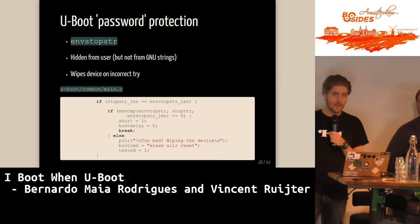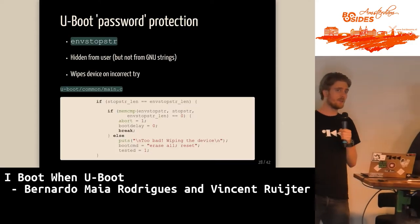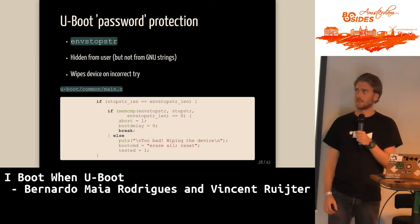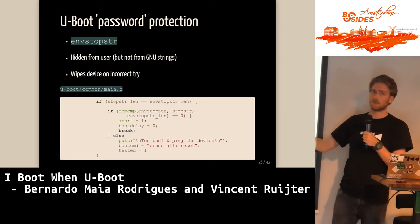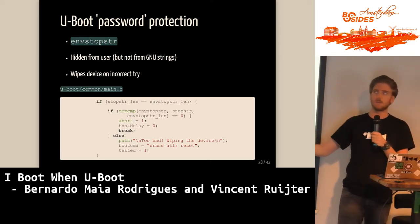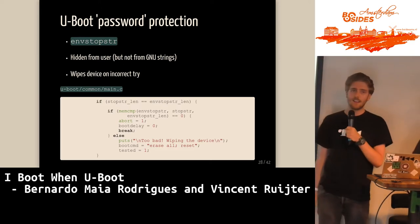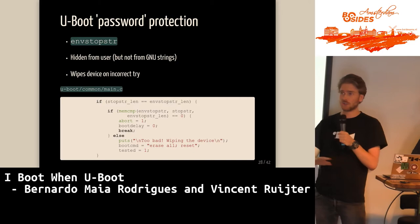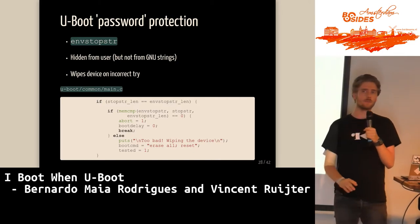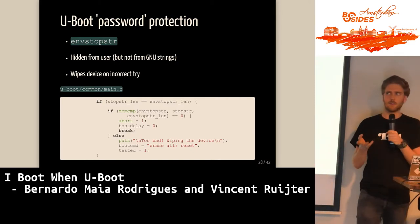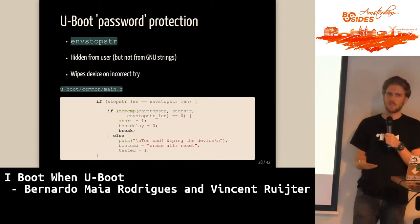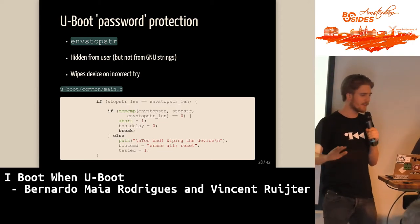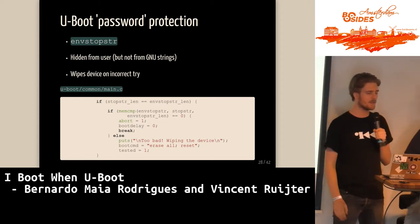U-Boot has a password protection — but when you Google 'U-Boot password,' the first thing that comes up is the env stop string. It is not a password protection and should not be used as one. You can just download the firmware, run strings on it, and see the password.